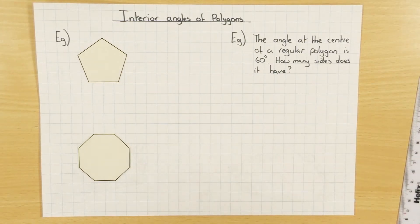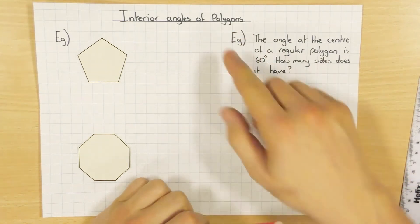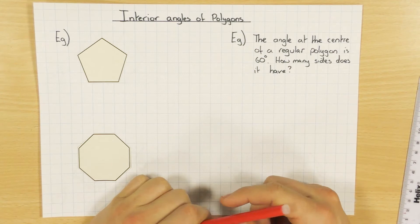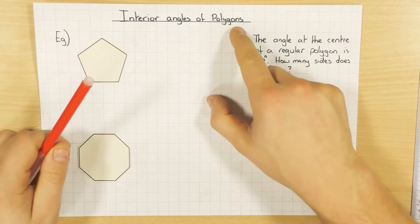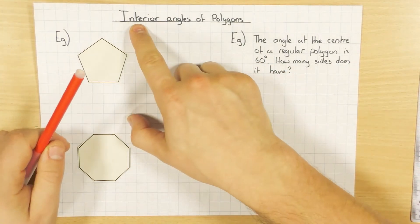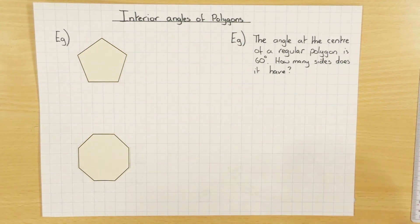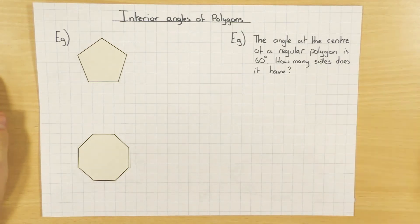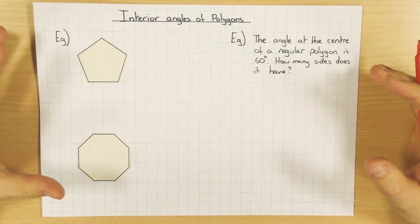Hi guys, in this video we're going to have a look at interior angles of polygons. Polygon just means a many-sided shape — it could be a three-sided shape, a four-sided shape, a five-sided shape, a ten-sided shape. The word interior, as you might have already guessed, just means inside the shape. We're going to look at all the angles inside these shapes. I'm going to show you a few different ways you can work this out, so you can use whichever one you want.